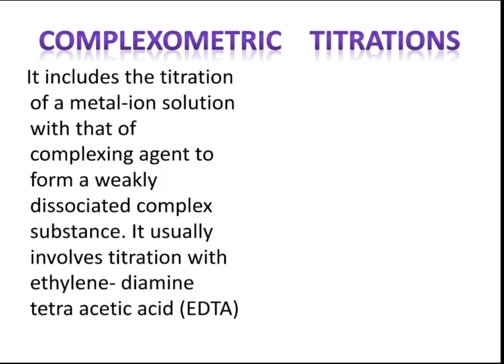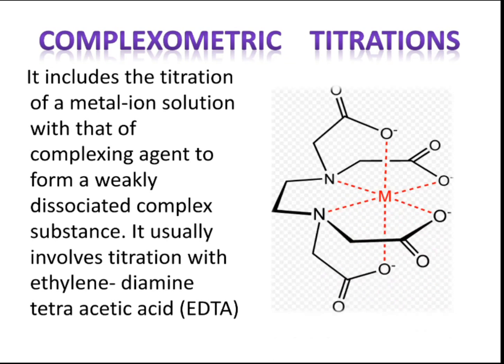Complexometric titration includes the titration of a metal ion solution with a complexing agent to form a weakly dissociated complex substance. It usually involves titration with ethylenediamine tetraacetic acid, also called EDTA. In the image, M refers to the metal ion.